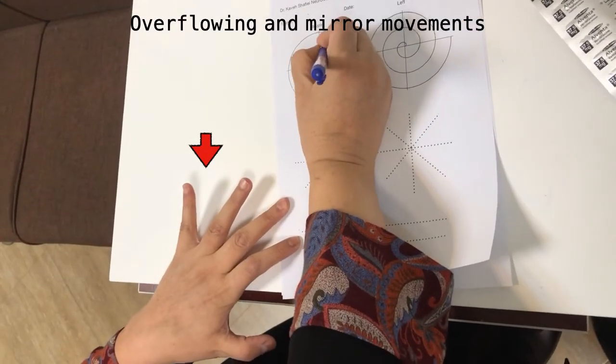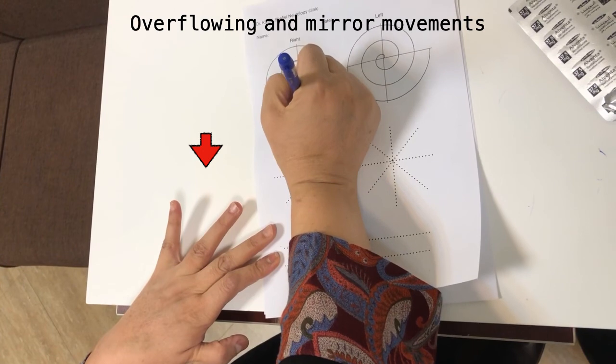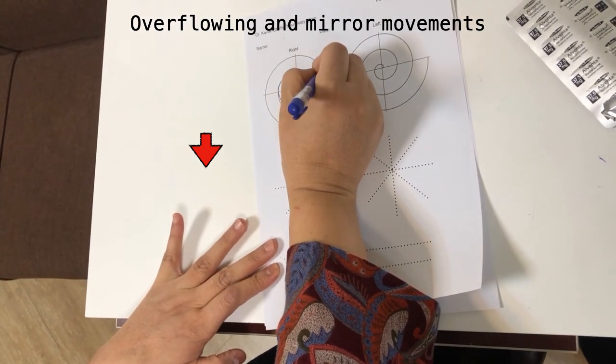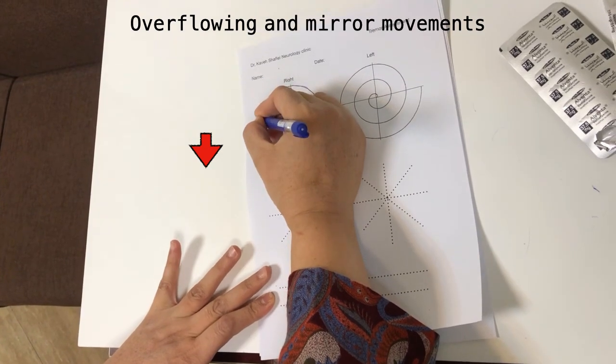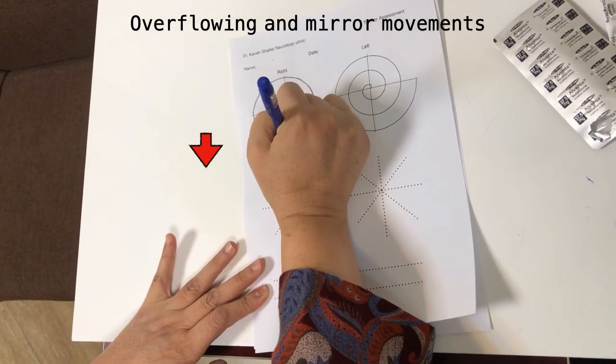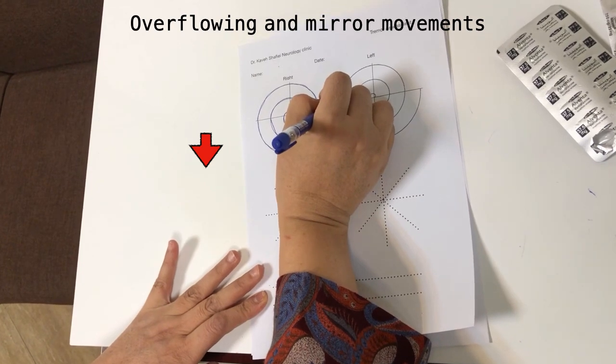Besides the dominant hand, you have to look at the other hand or non-dominant hand, because sometimes you can see overflowing or mirror movements. It's a critical point to look at the other hand during writing—it gives you much more information that you need.